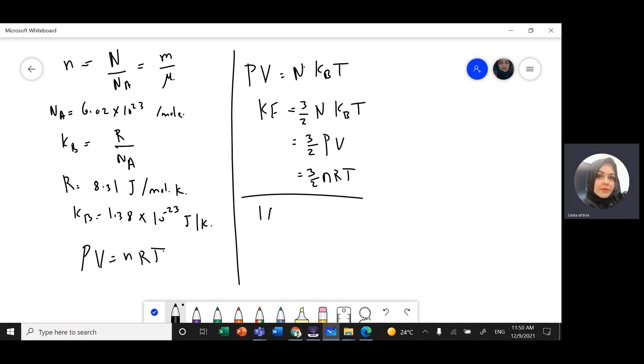One atmospheric pressure equals 100 kilopascals, which equals one torr and one bar. One Pascal is one Newton per meter squared. Pressure is force divided by area, a scalar quantity, though force is a vector quantity.